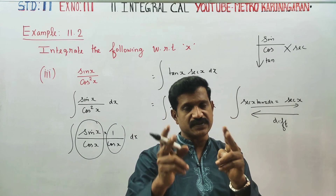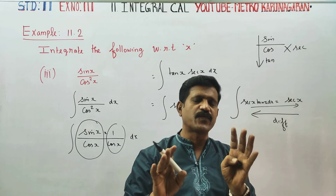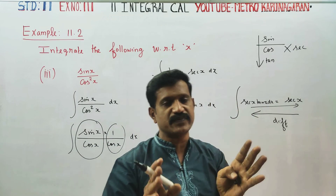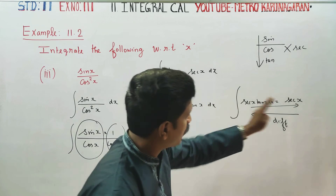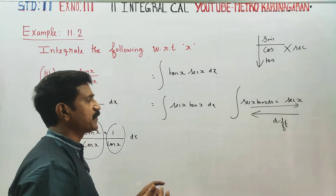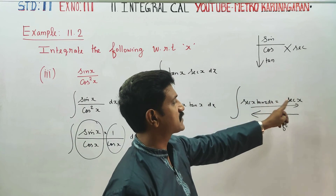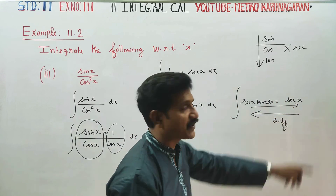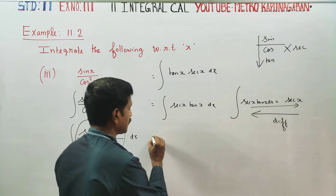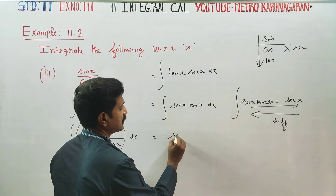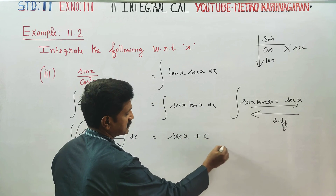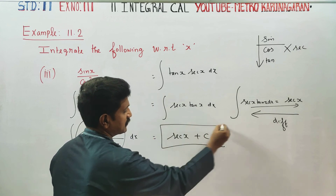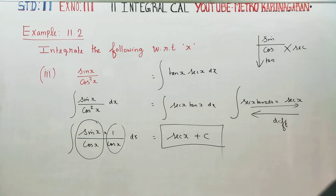Differentiation and integration are opposite to each other. The differentiation formulas are many, but integration formulas follow from them in the opposite direction. Integrating secant x tan x gives you secant x. Therefore, your final answer will be secant x plus C. Thank you.